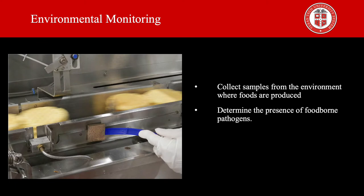Environmental monitoring consists in the collection of samples from the environment where foods are produced. These places can be either a manufacturing plant or a commercial kitchen. The lack of good manufacturing practices may contribute to the contamination of finished product.